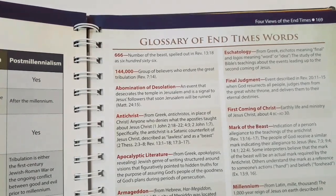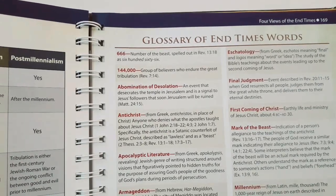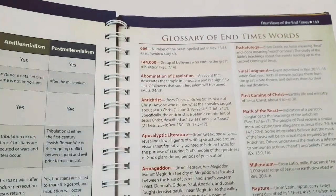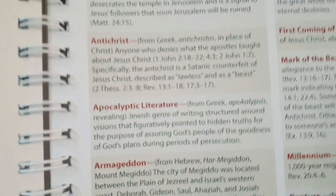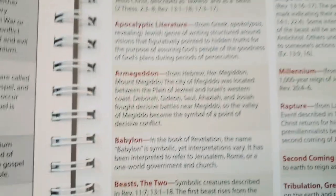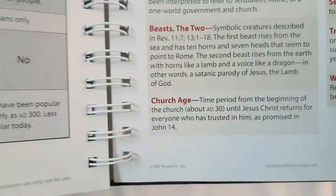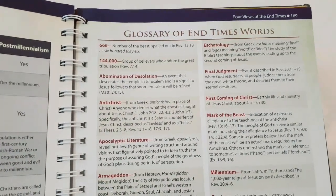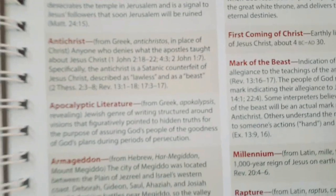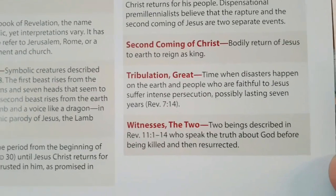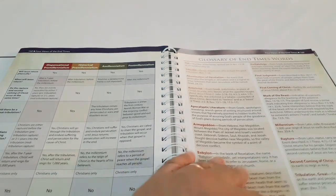A glossary of end-time words: 666, the 144,000 — not Jehovah's Witnesses according to their theology, but Jewish believers — abomination of desolation, Antichrist and the spirit of Antichrist which John talks about and which is prevalent today, Armageddon — not the movie with Bruce Willis but the actual final battle — Babylon, church age, eschatology (the study of Bible teachings and prophecy concerning end times), first coming of Christ, second coming (the bodily return of Jesus to reign as king), and two witnesses. There's also the biblical descriptions of heaven and hell.